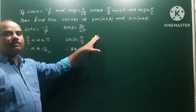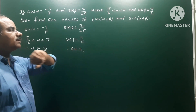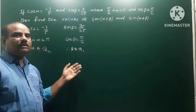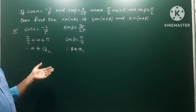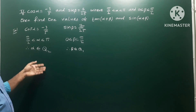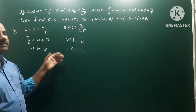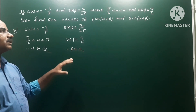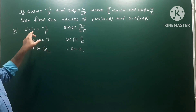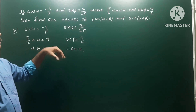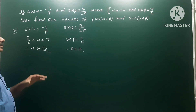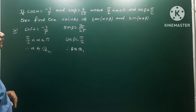We need to find tan(α+β) and sin(α+β). The formula for tan(α+β) is: tan α + tan β divided by 1 minus tan α·tan β. The formula for sin(α+β) is: sin α·cos β + cos α·sin β.